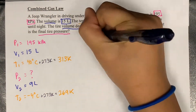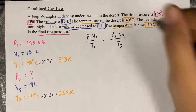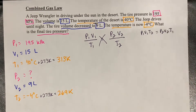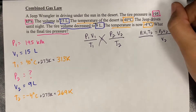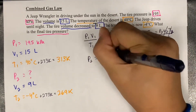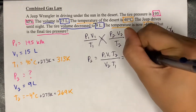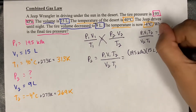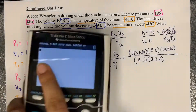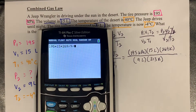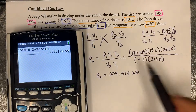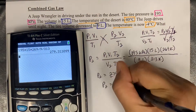Now we can solve. Write the equation: P1 V1 over T1 equals P2 V2 over T2. Cross multiply: P1 V1 T2 equals P2 V2 T1. Then divide by V2 T1 to isolate P2, so the equation is P2 equals P1 V1 T2 over V2 T1. Now you plug in all the numbers — remember the units — and put it into the calculator. You get 279.313 kPa. Look at sig figs — the lowest is 9 significant figures, so you round to the first sig fig. The final answer is 300 kPa.